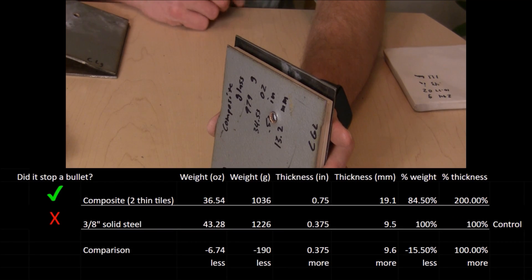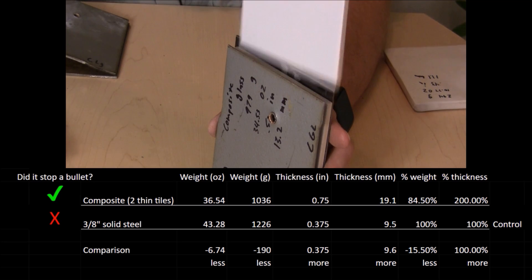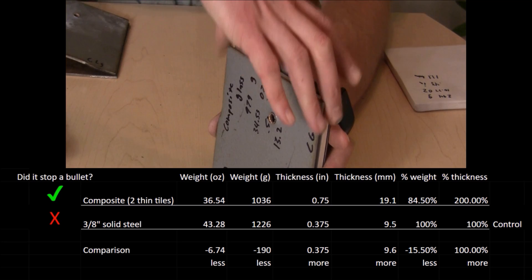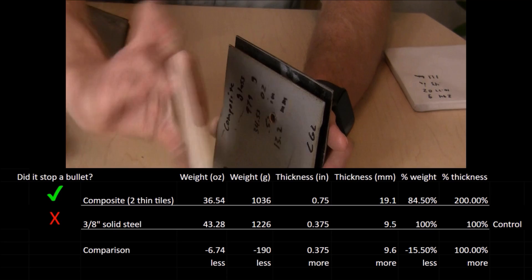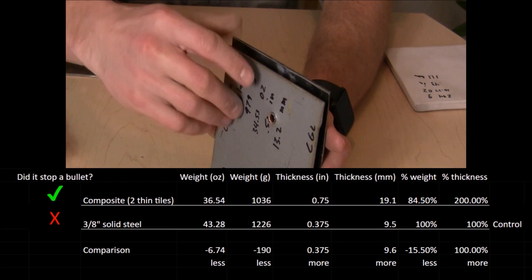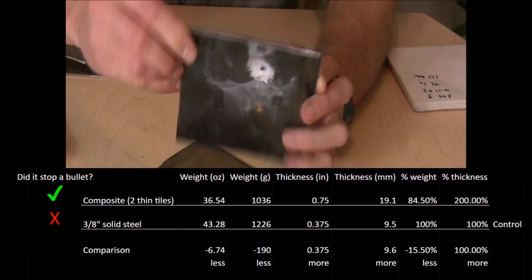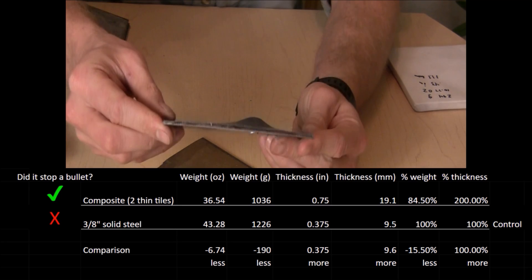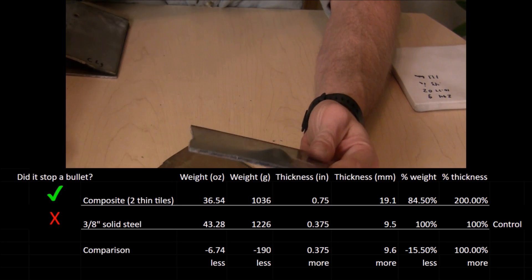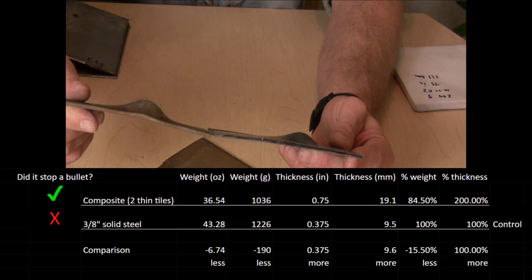Finally, our composite target using two thin tiles also stopped a 5.56, this time at 15.5% less weight than the control. And the dent that it produced was even less than that using the glass target.